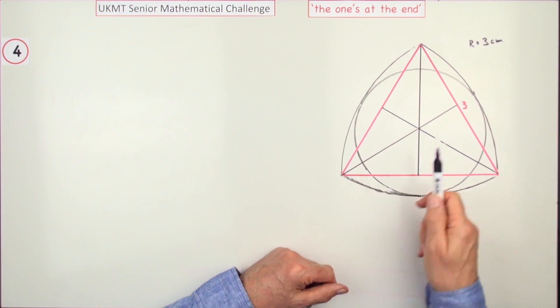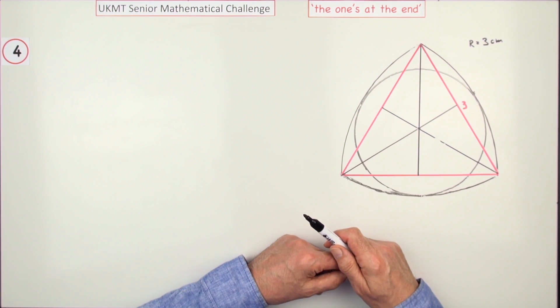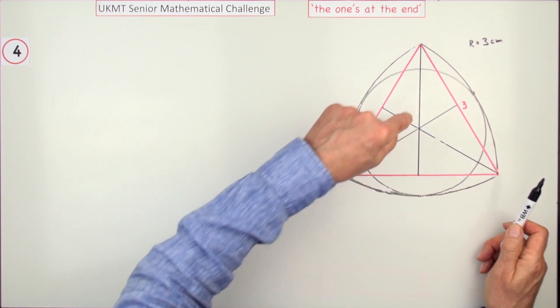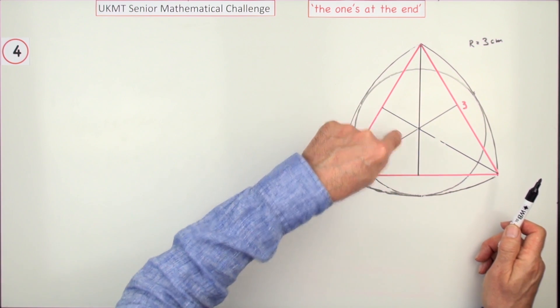So I don't need to know anything about centroids. Not only that, because it's completely symmetrical, each of these triangles is identical - congruent.